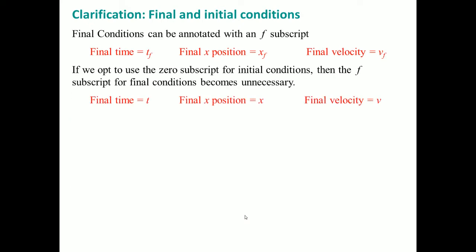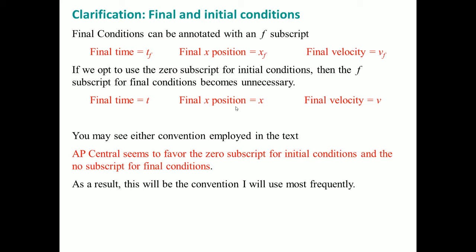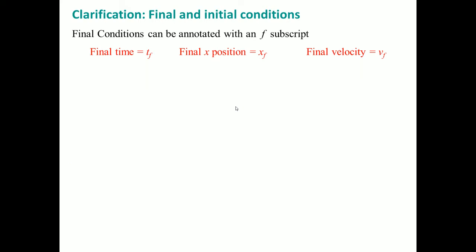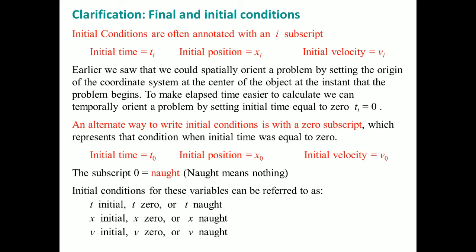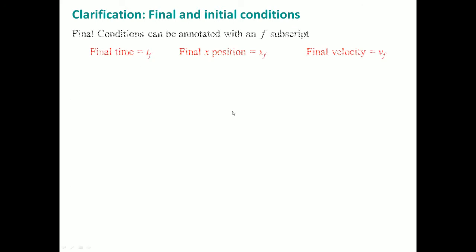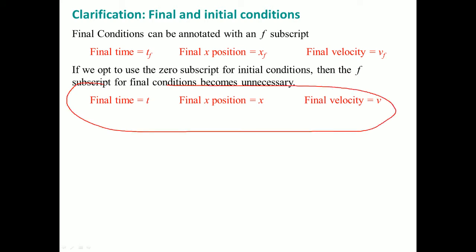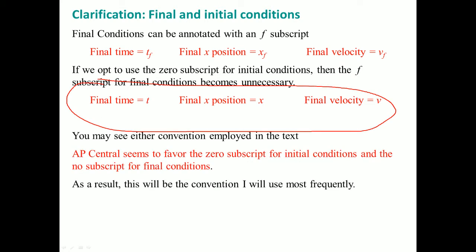Final and initial conditions: the final condition can be seen with the subscript F, or sometimes without any subscript at all. You might also see it written with a 1. AP Central seems to favor the zero subscript for the initial condition and no subscript for the final condition. A good way to remember is: use the zero format as initial and no subscript as final. That is the best format, though in class I would use them interchangeably.